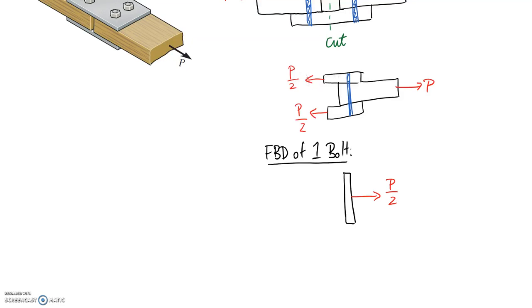Then similarly, we're going to have forces pulling it back the other way, but because we only have one bolt that we're looking at, we're going to need to halve these, so it's going to be P/4 and P/4.